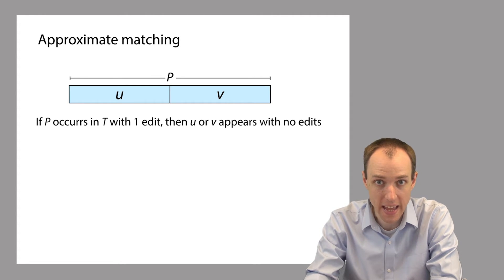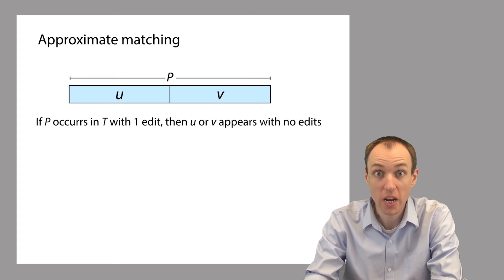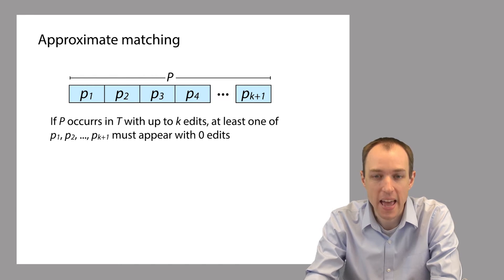So that's the one edit case. What about the general case, where we might want to allow more than one edit? So let's say we want to allow, say, k edits.